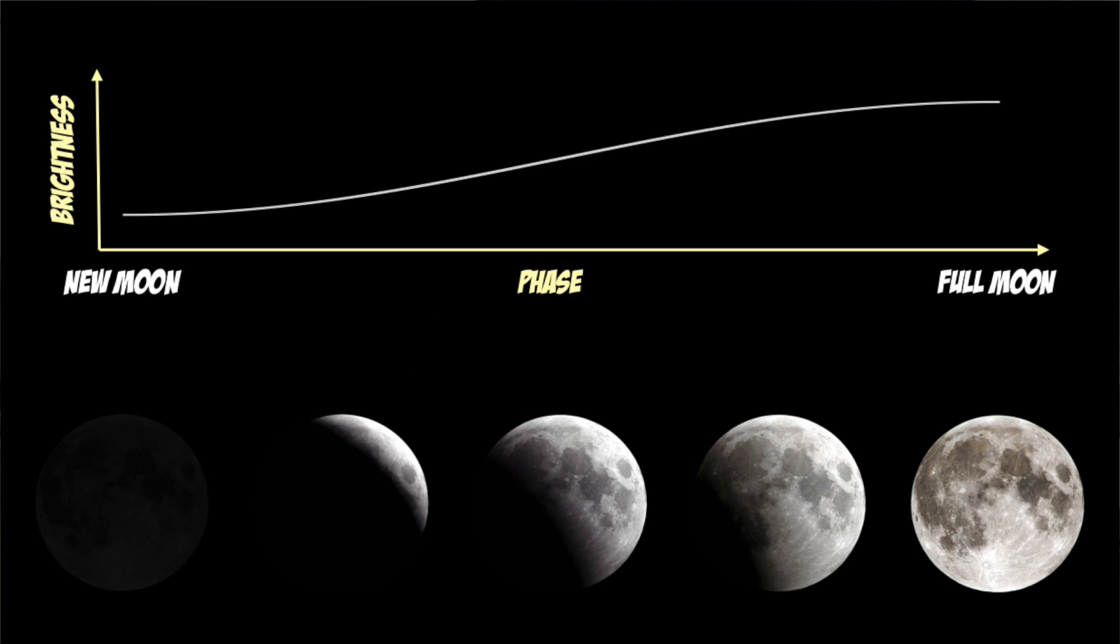If we were to construct a phase curve of the moon from new to full, we would see that the amount of light increases. Well, we can do the same thing with an exoplanet.